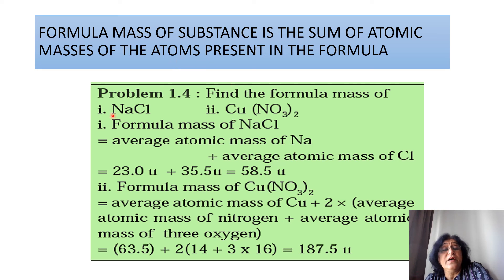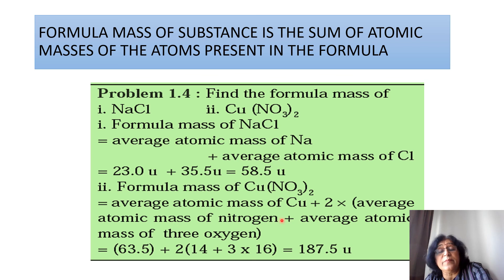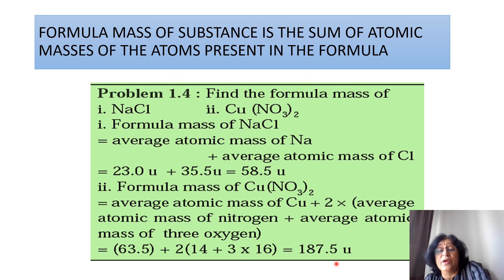The formula mass of NaCl equals the average atomic mass of sodium plus the average atomic mass of chlorine: 23 U + 35.5 U = 58.5 U. For copper nitrate, the formula mass is the average atomic mass of copper + 2 × average atomic mass of nitrogen + 2 × average atomic mass of 3 oxygens: 63.5 U + 2 × 14 + 3 × 16 = 187.5 U.